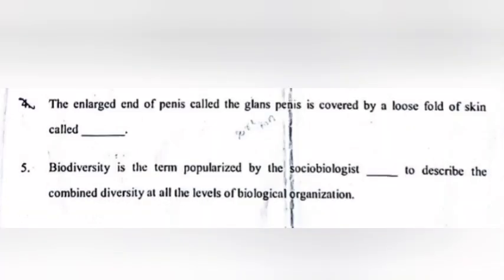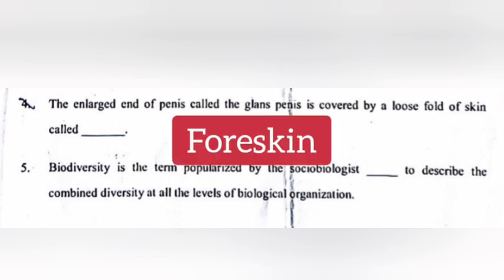Question 4: The enlarged end of the penis called the glans penis is covered by a loose fold of skin called — answer: foreskin.